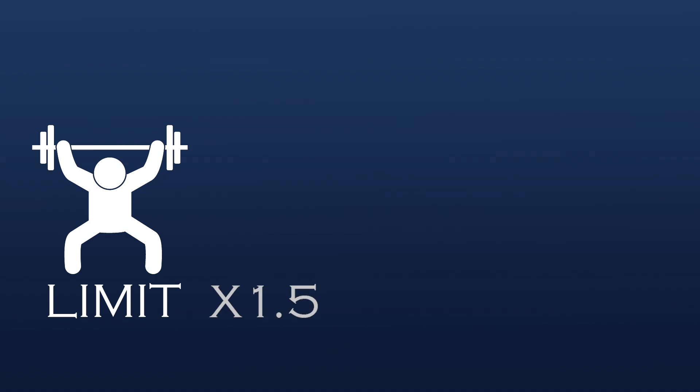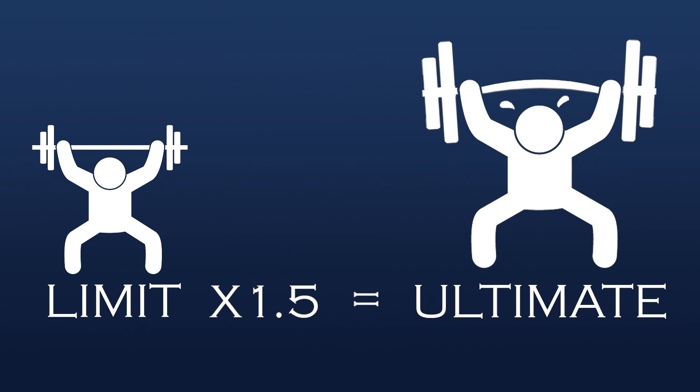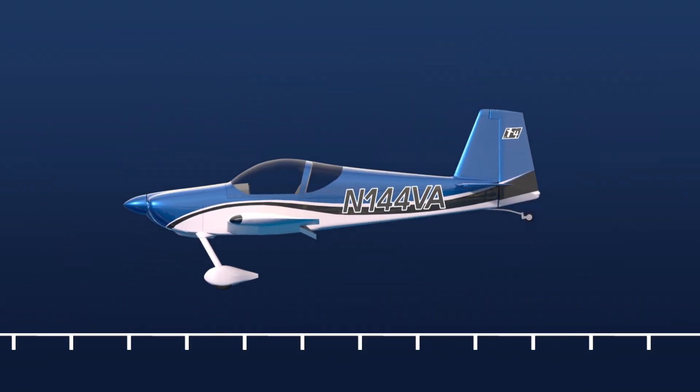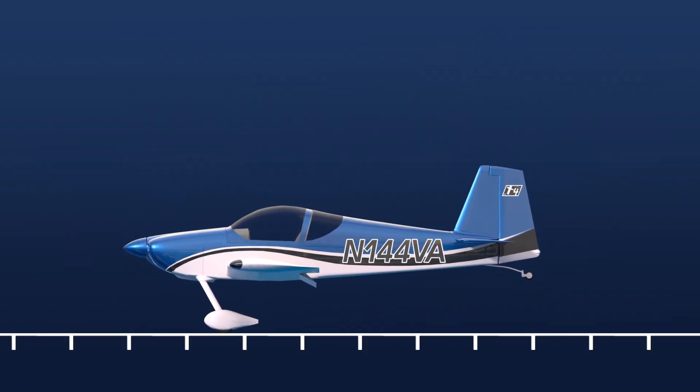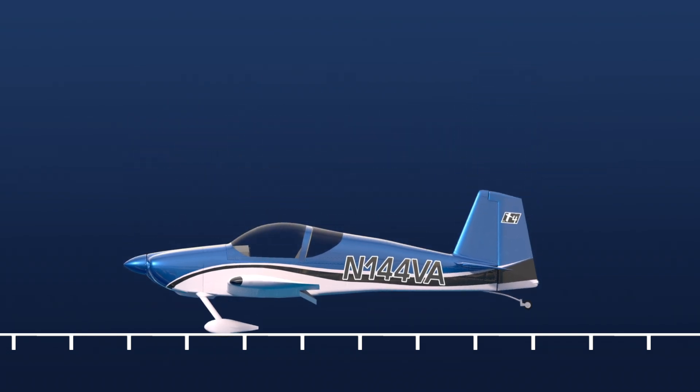Remember that the limit load is the maximum load the aircraft is expected to safely carry. Multiplied by a factor of 1.5, we wind up with a value called the ultimate load. In an ultimate test, the structure is allowed to permanently deform, but may not fail catastrophically.